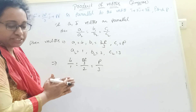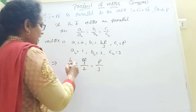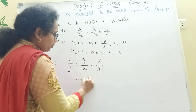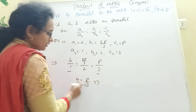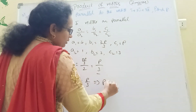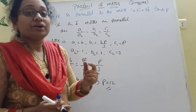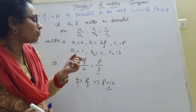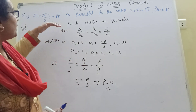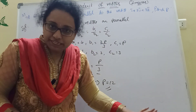We can take any two ratios and cross-multiply to find P. Taking 4 equal to P by 3, cross multiplication gives P equal to 12, or taking the B ratio: 4 equals 2P by 3 divided by 2, so P can be found. These parallel and perpendicular conditions are very important to remember.